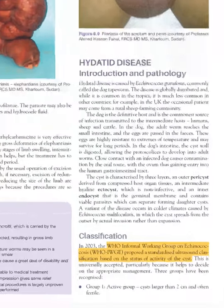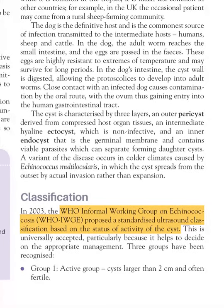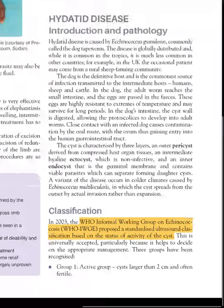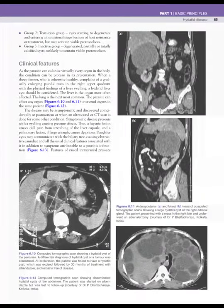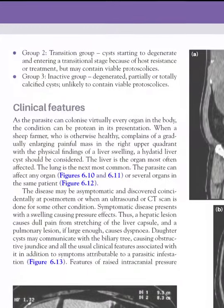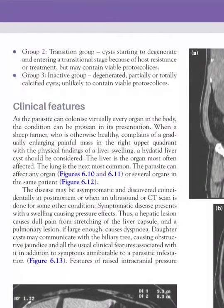The WHO Informal Working Group on Echinococcosis proposed an ultrasound classification based on cyst activity status. Group 1 is the active group: cysts larger than 2 cm and fertile. Group 2 is the transitional group, where the cyst is beginning to degenerate and entering a transitional stage — an intermediate group that may still contain viable protoscolices.